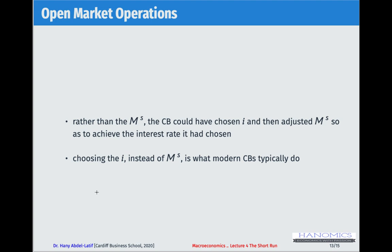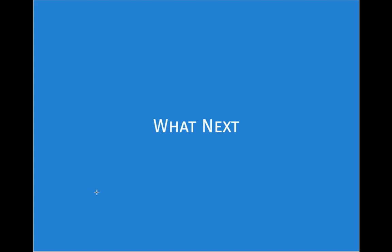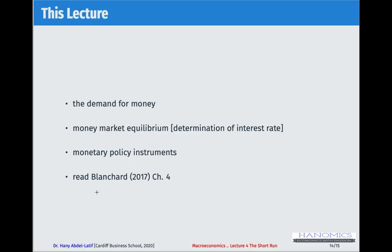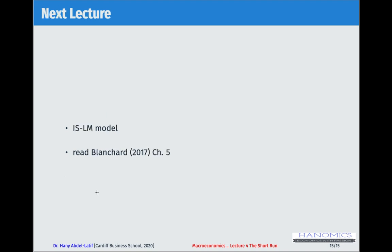This is everything for today, focusing on the money market. Equilibrium happens through demand and supply — understanding what determines both sides helps us understand the money market equilibrium. You can read Chapter 4 in the textbook for this lecture. Next time we will look at equilibrium in both the goods and money markets together.